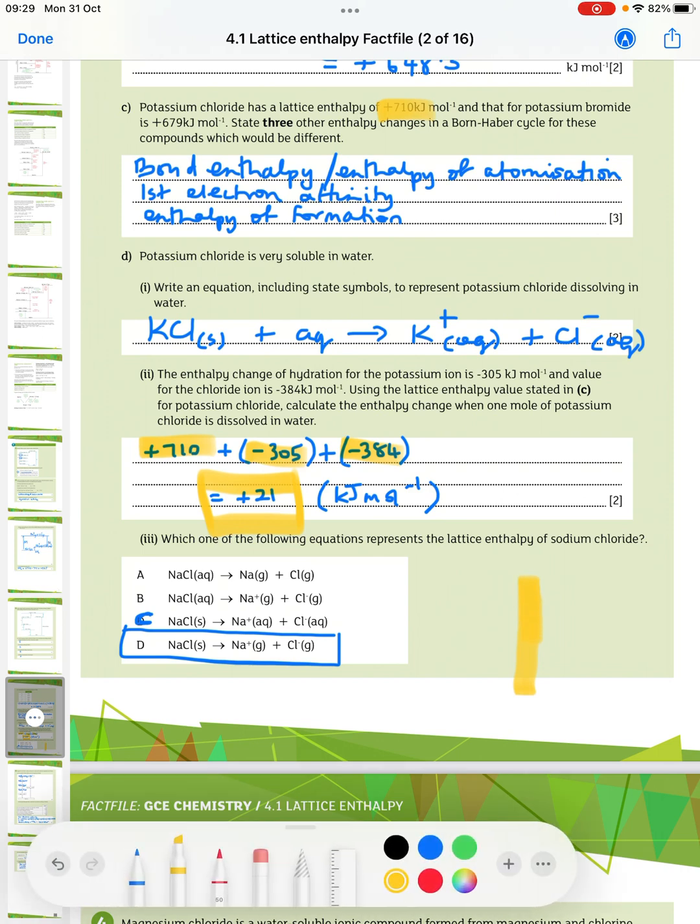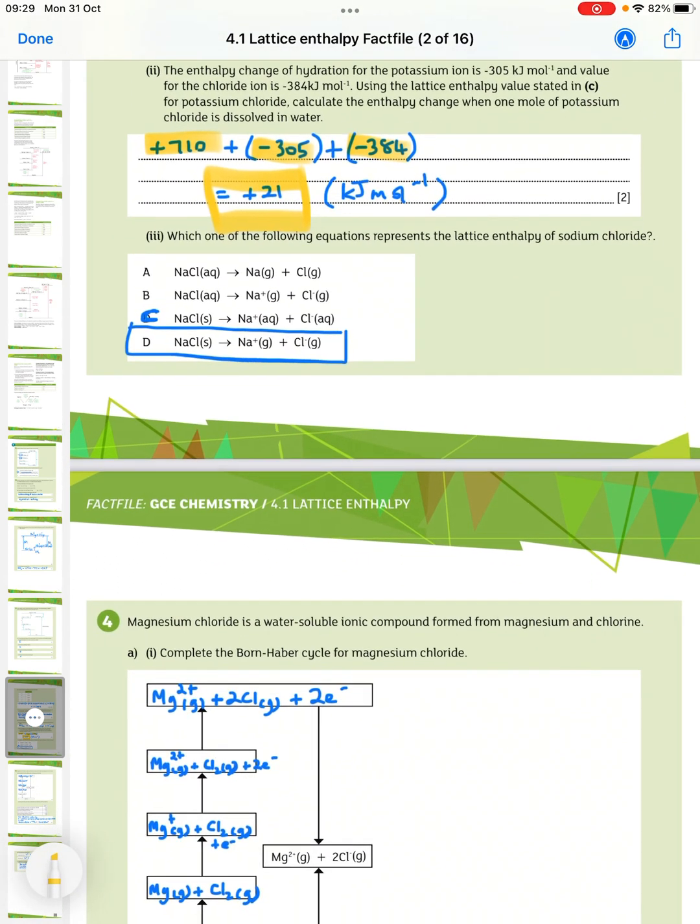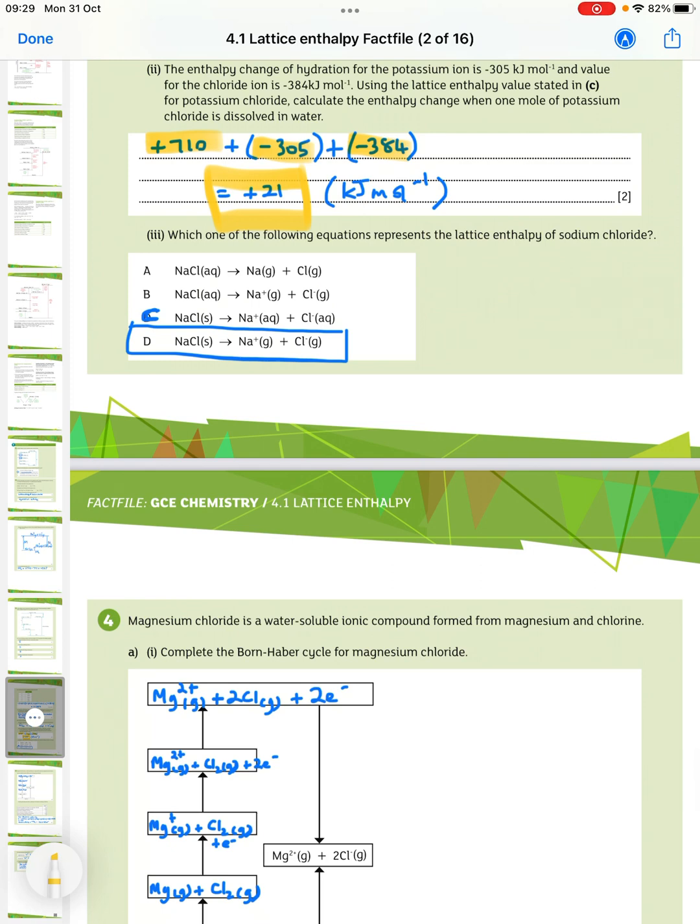So, which one of the following, then, represents the lattice enthalpy of sodium chloride? So, we're looking for the solid sodium chloride, giving you the two gaseous ions. So, it has to be D.